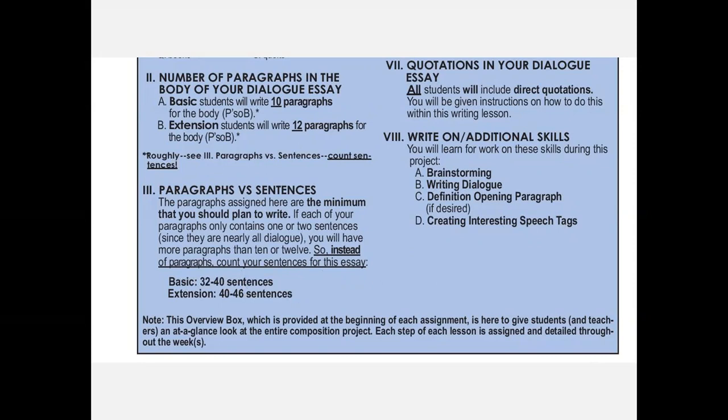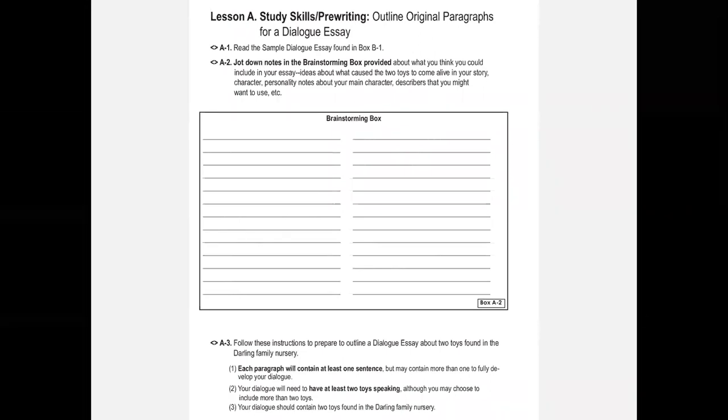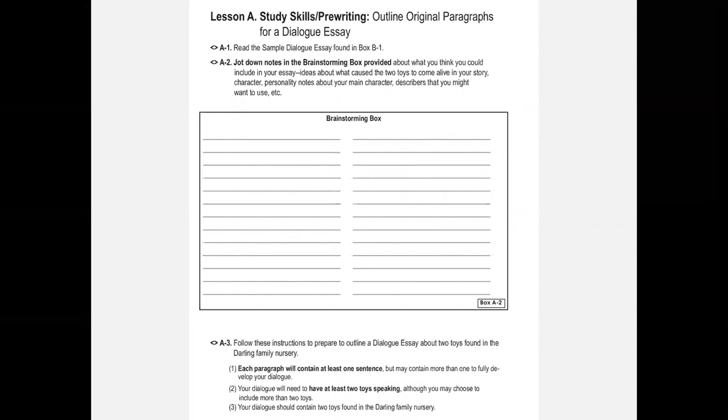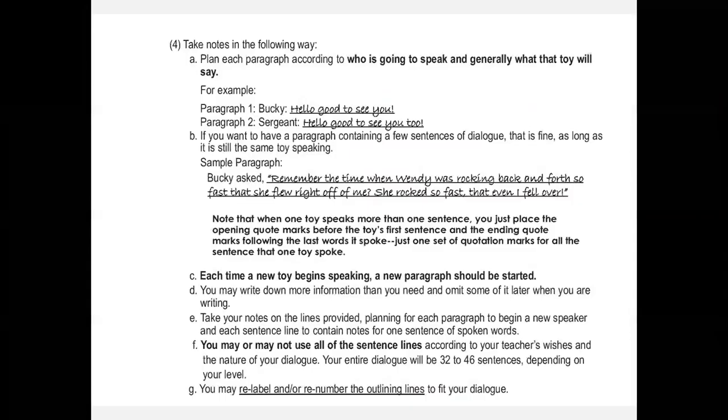We have the write-on skills — they are going to learn dialogue. This assignment is laid out so they read the sample first. At the top, lesson A, they read the sample first and then jot down notes in the brainstorming box about what they could include in their essay: what caused their two toys to come alive, character and personality notes about their main characters, describers, and so forth. The beauty of a lot of these write-for-a-month lessons is that they are about things that students know something about — most people know something about Peter Pan through movies, even though it was originally a book.